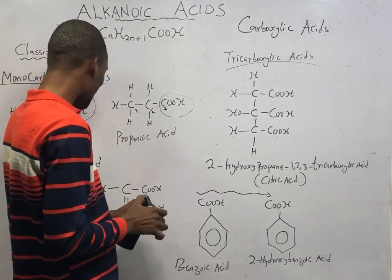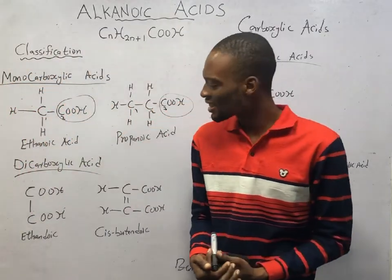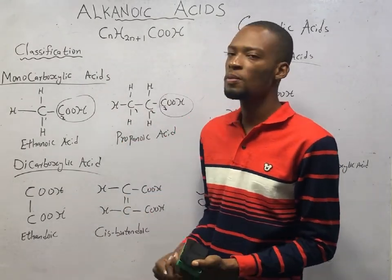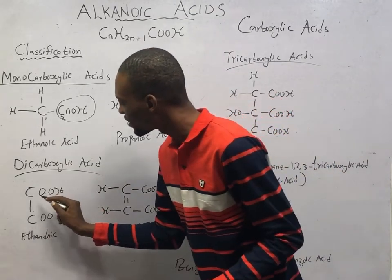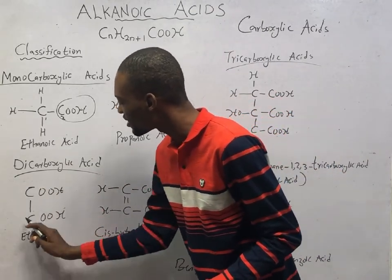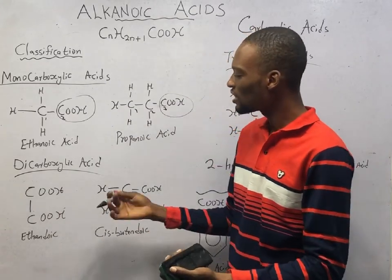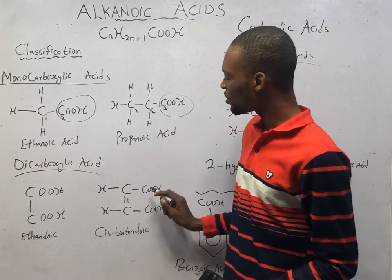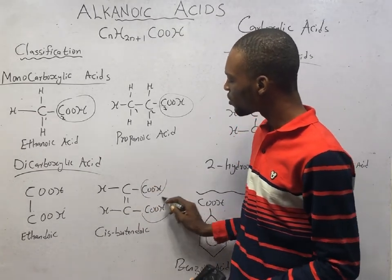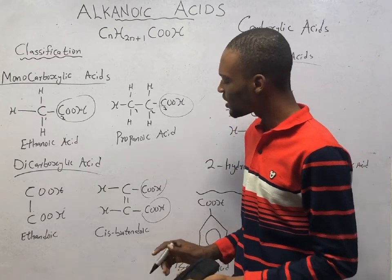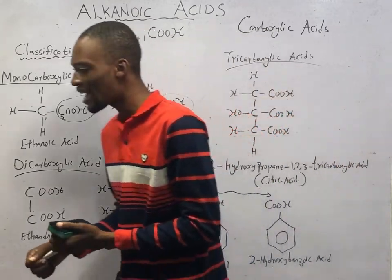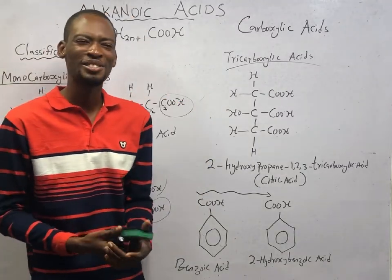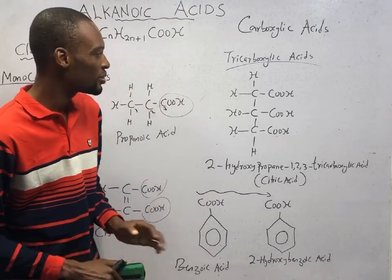Dicarboxylic acids possess two carboxyl groups. For example, ethanedioic acid has a COOH at each end. Another example is cis-butenedioic acid, which also has two carboxyl groups and is an isomer.